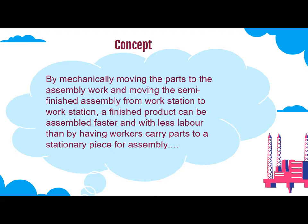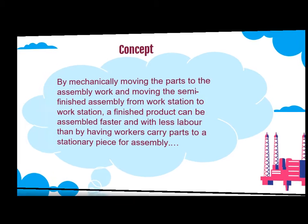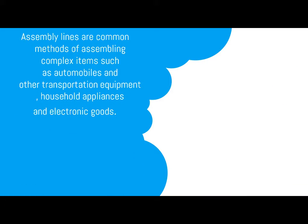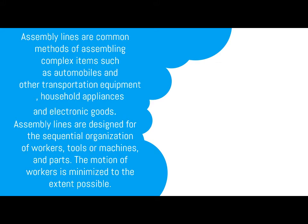A finished product can be assembled faster and with less labor than by having workers carry parts to a stationary piece for assembly. Assembly lines are common methods of assembling complex items such as automobiles and other transportation equipment, household appliances, and electronic goods.